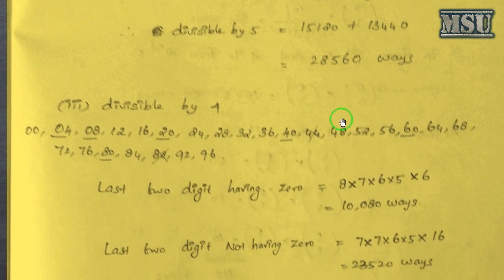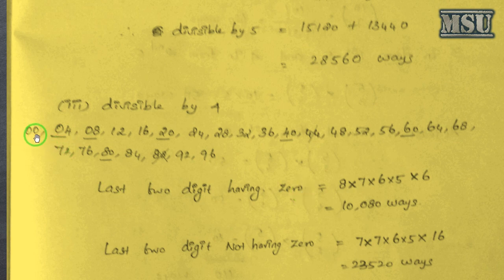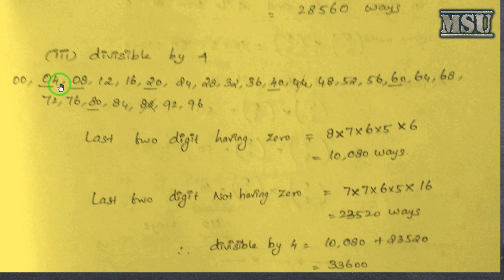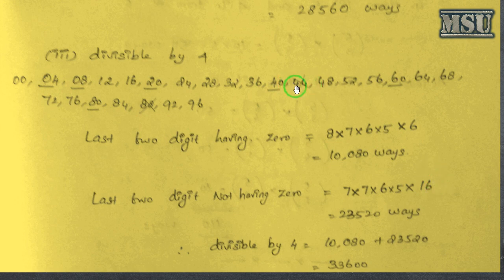Another condition is divisible by 4. Within 100, divisible by 4 can end with values like 04, up to 96. The last 2 digits having 0 means last 2 digits are fixed, so 8 into 7 into 6 into 5 into 6. Last 2 digits not having 0 — those values are 12, 16, 24, 28, and so on — there are 16 possibilities. Last 2 digits having 0 gives only 6 possible endings: 04, 08, 20, 40, 60, and 80. For the 16 non-zero cases, you can't have 44 and 88 because digits are repeating. So 0 is not possible for the first digit, and the last 2 digits are excluded. So we get 7 into 7 into those values.